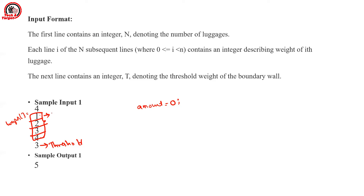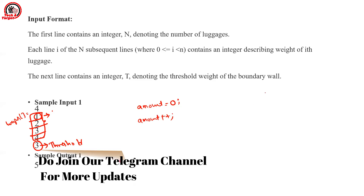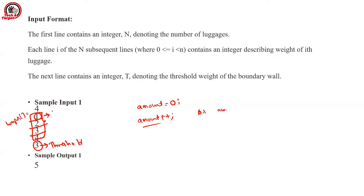For each element, we check if the current weight is less than or equal to the threshold value. If so, we increment amount by one — you can write amount++ or amount += 1, both are correct. If the current weight is greater than the threshold, then amount += 2. We continue applying these two conditions for all elements of the array.